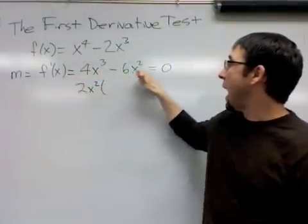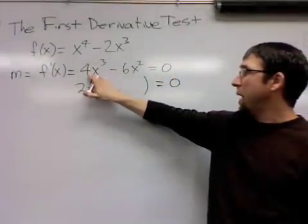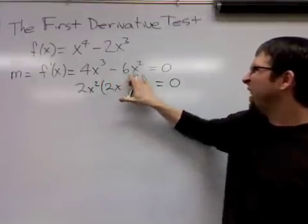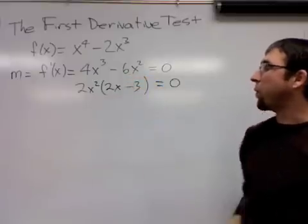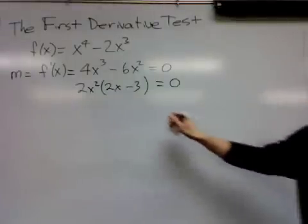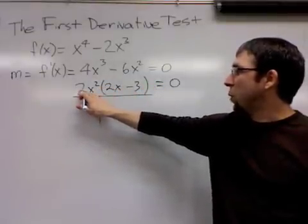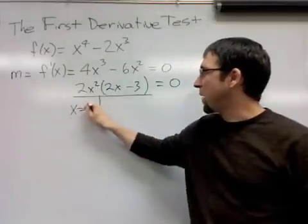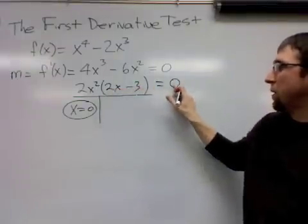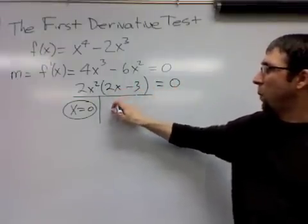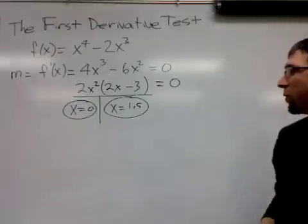Set the slope equal to zero and continue to solve it. You can take out a greatest common factor of 2x² out of both of those terms. Dividing 2x² out of that would leave you with 2x, and dividing 2x² into that -6x² would leave you with -3. Keep on solving until you actually get both x values. What will it take to make 2x² equal to zero? A zero. And that's one of our critical values. What would it take to make 2x - 3 equal to zero? Well, if x was 1.5, that would do it. So those are our two critical values.